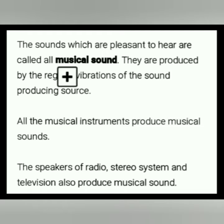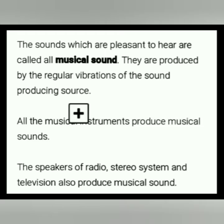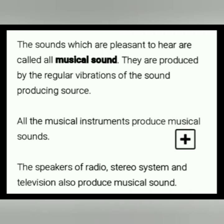Musical sounds are produced by the regular vibrations of the sound producing source. As we studied, noise is produced by irregular vibrations, whereas music or musical sound is produced by regular vibrations. This is the major difference between them, and all musical instruments generally produce musical sound.